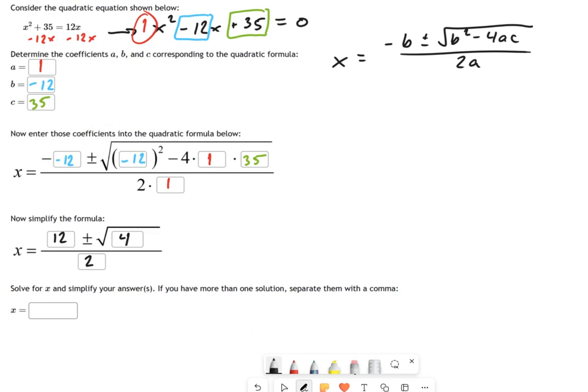So you have to write all those parentheses so the calculator knows exactly what you want. This is what I get: 12 plus or minus square root of 4, all divided by 2.